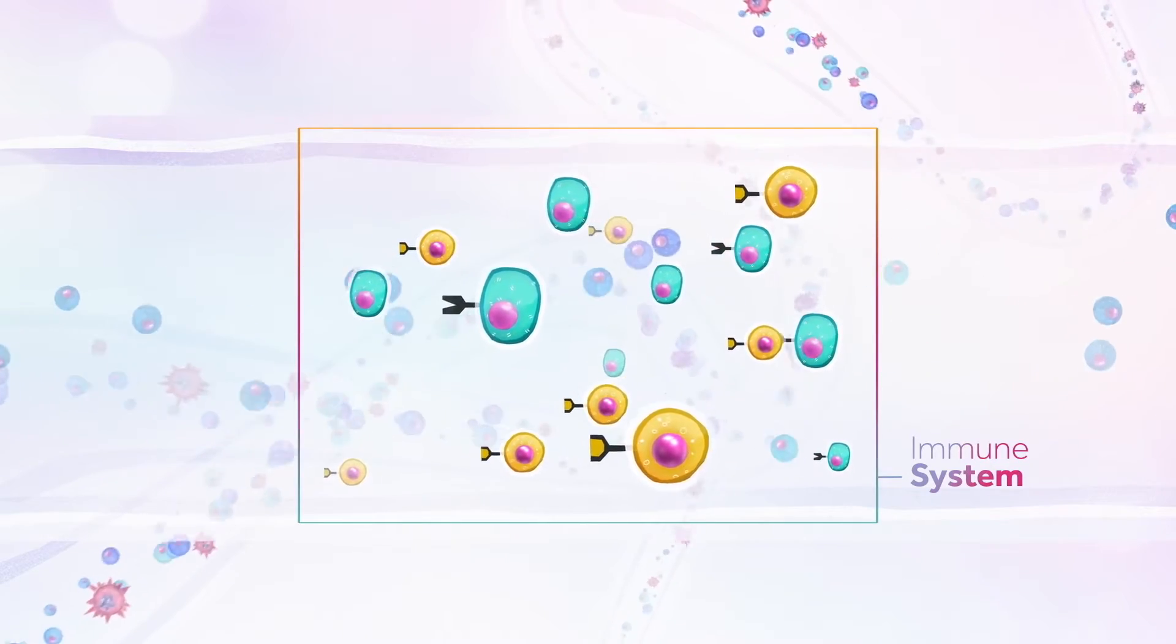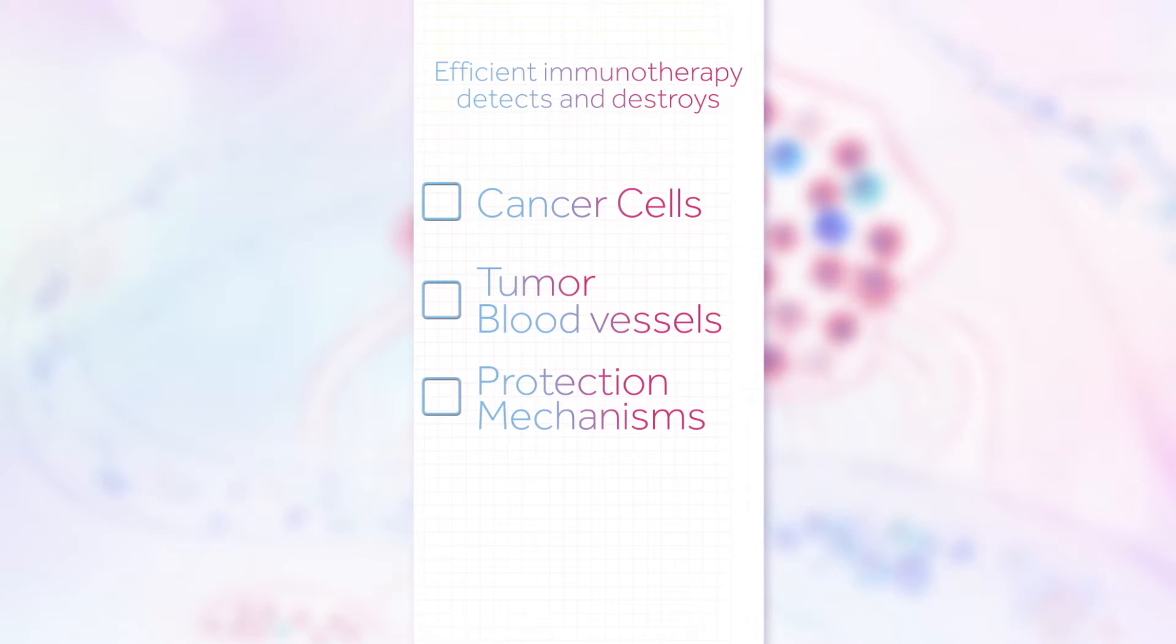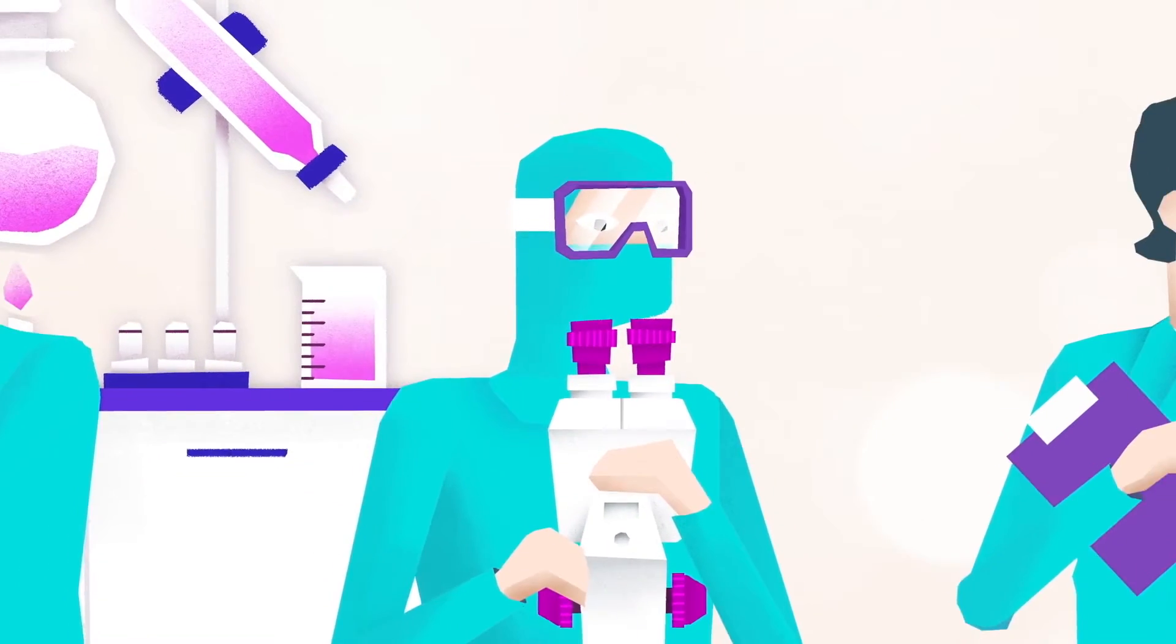To have an efficient cancer therapy, in particular for solid tumors, it needs not only to detect and destroy cancer cells, but also to inhibit the formation of the blood vessels that feed the tumor, abrogate the protection mechanisms settled by the tumor to escape from the immune system, and restore the ability of the immune system to rapidly recognize and fight potential further aggressions by the same cancer type.